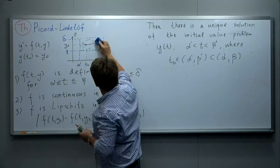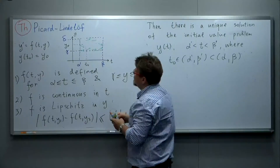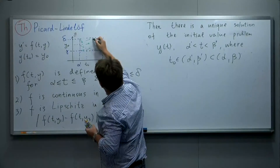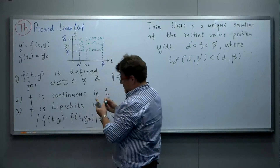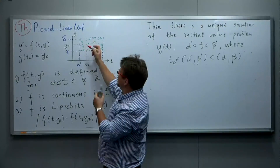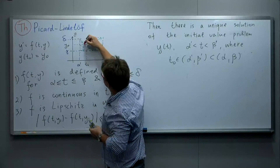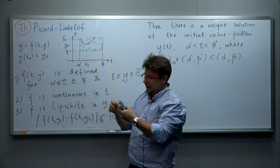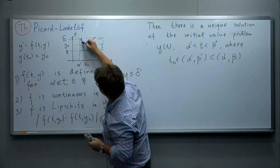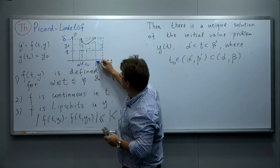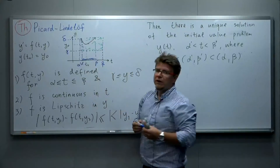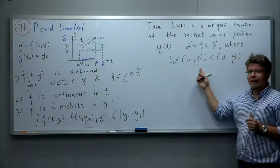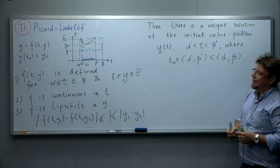Imagine the vector field looks like this, with steeper arrows. Then the curve, since it must be tangent to the vector field at each point, will go up steeply, and the interval of t for which the curve stays within the rectangle is not [α, β] but a smaller interval [α', β']. This is the existence part and the remark about the domain — the domain of the solution may be smaller than the domain of the right-hand side.